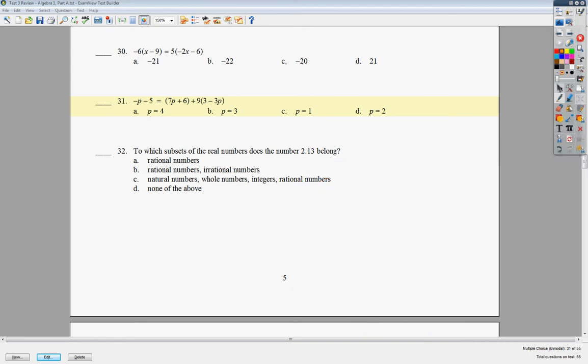Pretty simple stuff. Just make sure you get your signs correct. 31, I think, is one of the last really gigantic ones, but I could be wrong. Negative p minus 5 is equal to 7p plus 6 plus 9 times the quantity 3 minus 3p. Draw your line. I don't have to do any distributive property here. 9 times 3, 9 times negative 3.